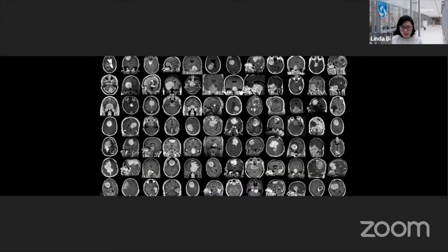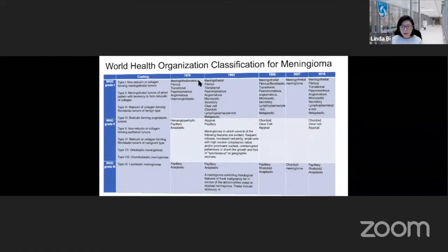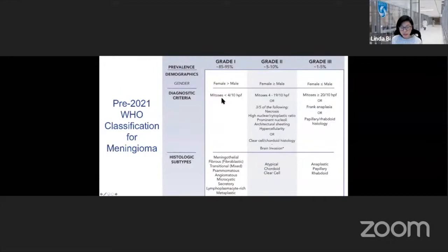This audience needs no introduction to meningiomas as a whole — they come in all varieties, flavors, sizes, locations, and most importantly, behaviors. That spectrum of behaviors, since the initial description by Harvey Cushing, has generally been described by a constellation of histopathologic features. The most recent published WHO grading scheme classifies meningiomas into three grades: nine histologic subclasses of grade one, three for grade two, and three for grade three — divided by mitoses, histopathologic features, and characteristic microscopic appearance.